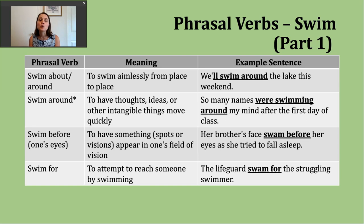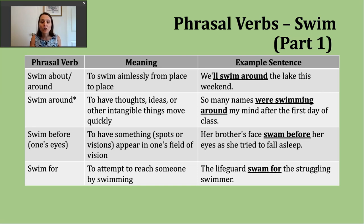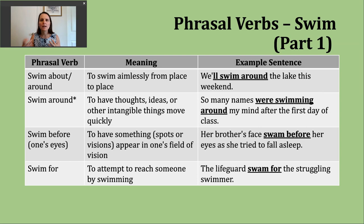The next phrasal verb is 'swim before,' usually used in the longer phrase 'to swim before one's eyes.' This is not a literal, in-water meaning. It means to have things — spots, visions, pictures — appear in your vision. An example: 'Her brother's face swam before her eyes as she tried to fall asleep.' So she's having visions or pictures in her mind, seeing her brother's face. This tends to appear more in literature when describing what a character is thinking or feeling. That sentence is an example of the simple past tense.